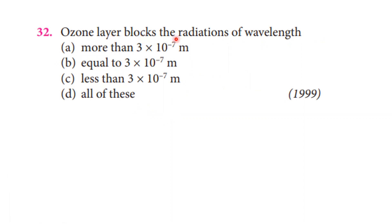The ozone layer blocks radiation of what wavelength? The ozone layer blocks ultraviolet rays. Ultraviolet rays are of the order of 3×10⁻⁷ meter. This falls in the ultraviolet spectrum range, which is less than the visible light range of about 3×10⁻⁷ m. So the ozone layer blocks radiation in the ultraviolet region, and option D is the correct answer.